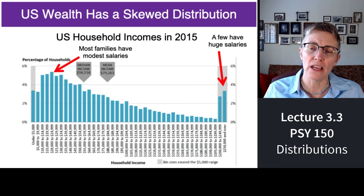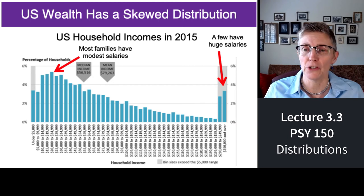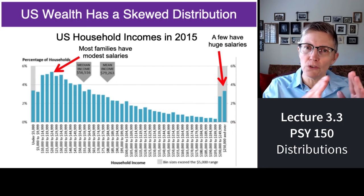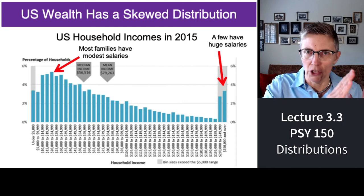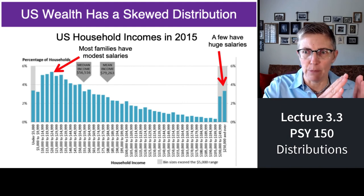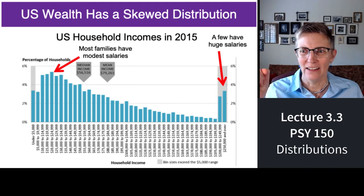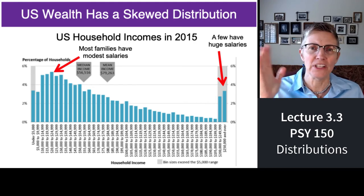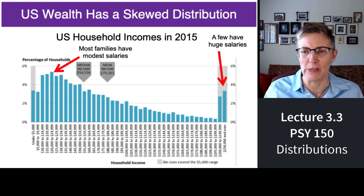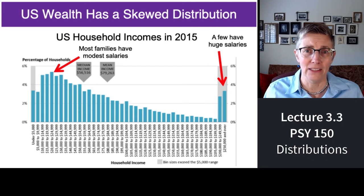Here is another skewed distribution. This is U.S. household incomes in the year 2015, and it is skewed. It's skewed and has this funny tail. So it's skewed. Most of the salaries are at the low end of the salary spectrum, except for this weird tail of super high, ridiculously high salaries that a few people have. That's definitely skewed.